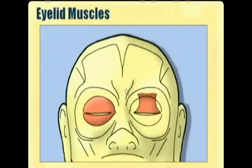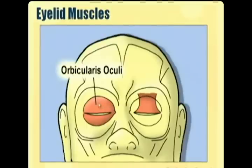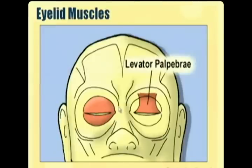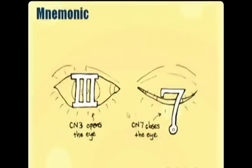The two main eyelid muscles are the orbicularis, which forms a circular pattern around the eyes to close the eye and is controlled by cranial nerve seven. In Bell's palsy, patients lose facial muscles on one side and have a hard time closing their eye, creating exposure problems. The other muscle is the levator palpebrae, controlled by cranial nerve three — it's a ribbon attaching to the top of the tarsal plate that pulls the eye open. A cranial nerve three palsy causes a ptotic, very low eyelid. The mnemonic: cranial nerve three opens the eye like a pillar; cranial nerve seven closes the eye like a fishhook.